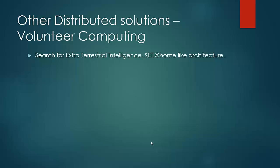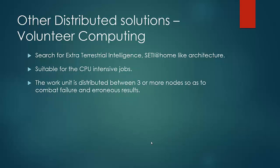When the work is finished, the application on our computer sends the results and asks for the next work unit. The central server has to distribute a work unit to three or more nodes so as to combat failure and erroneous results. This architecture is suitable only for CPU intensive work which can have variable throughput time, and can only be applied in situations where data can be shared across the network. So this is not a viable option for most business problems.